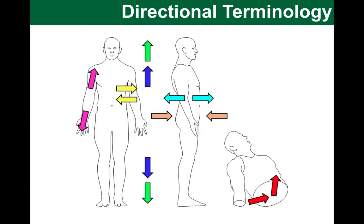Here you can see all the directional terms we have talked about. Practice them by describing relationships of different body parts. For example, the wrist is more distal than the elbow, the shoulder is more proximal than the elbow, the nose is more medial while the ear is more lateral, and so on.